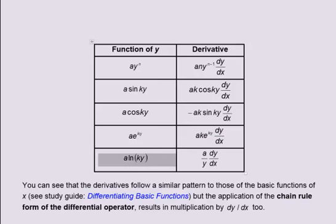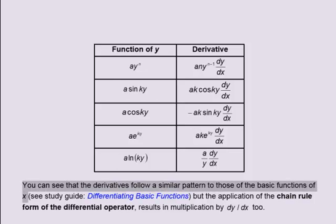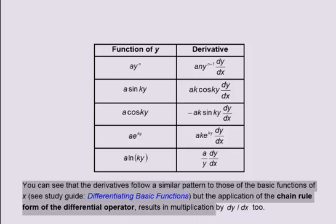If the function of y is a multiplied by the natural logarithm of ky, its derivative is a divided by y, multiplied by dy by dx. You can see that the derivatives follow a similar pattern to those of the basic functions of x — see the study guide Differentiating Basic Functions — but the application of the chain rule form of the differential operator results in multiplication by dy by dx too.